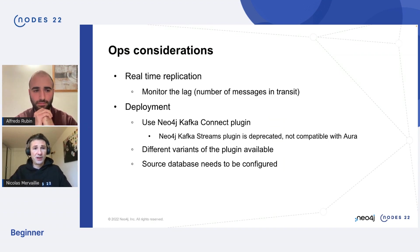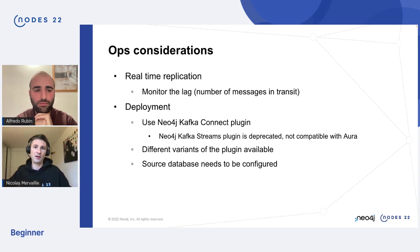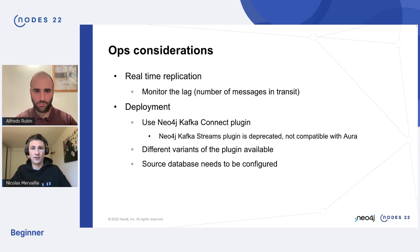For real-time replication, it's important to monitor the lag — meaning the number of messages in transit through Kafka — because if it grows a lot, it means you are running behind. You'll probably want to set up alerting so that in case of a hiccup or an infrastructure issue, you can react quickly.